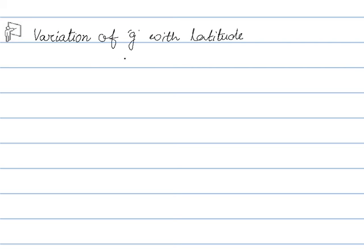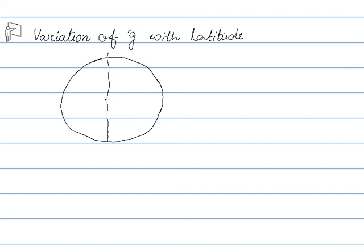Now we will see how acceleration due to gravity varies with latitude. Let this circle represent Earth. As the Earth rotates about its axis, all the particles lying on the surface of Earth also rotate. Suppose we consider a point mass at P. This is the mass M. Let P make an angle phi with the equatorial plane at the center.